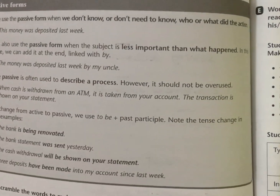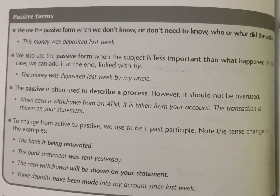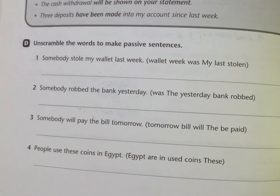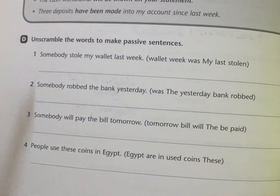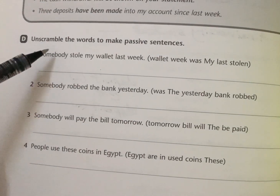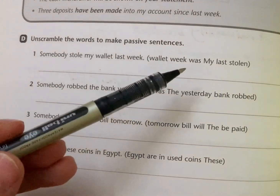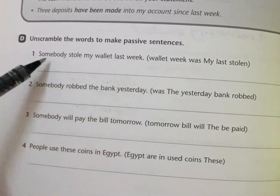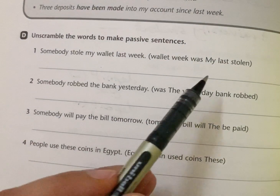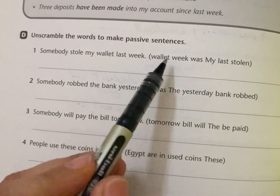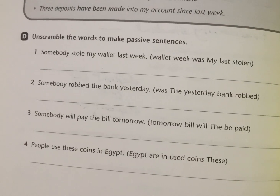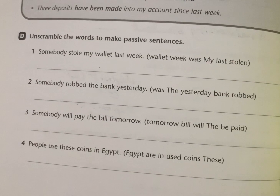نجي إلى البعد: passive forms — أشكال المبني للمجهول. شرحناها بالتفصيل في فيديوهات سابقة يمكنكم مشاهدتها. التمرين: unscramble — رتب الكلمات لعمل جمل مبني للمجهول. Number one: my wallet was stolen last week. Number two: somebody robbed a bank yesterday → the bank was robbed yesterday.